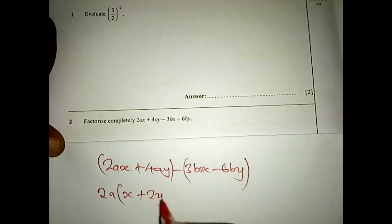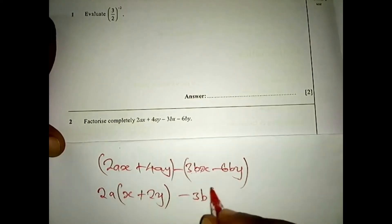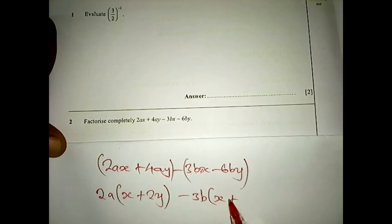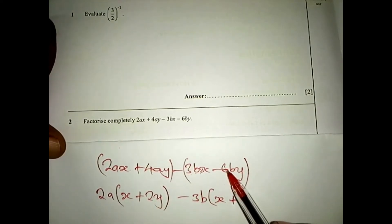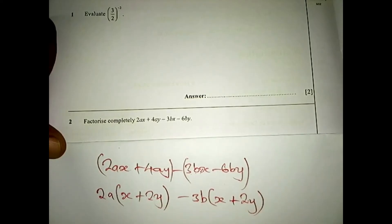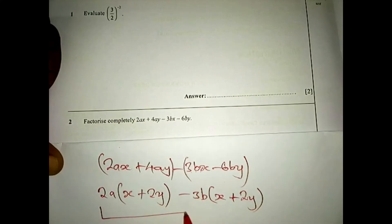You factor out 2a from the first group, leaving x plus 2y in brackets. Then from the second group, the common factor is 3 and b — 3 divides into both 3 and 6, and b is common — so you factor out 3b, leaving x plus 2y in brackets. Note the sign: it becomes minus 3b times the bracket, and you remain with 2y once 3 has been factored out.